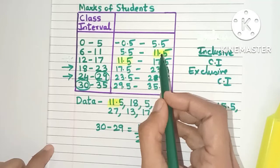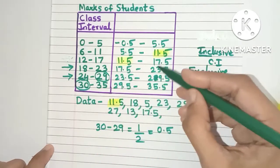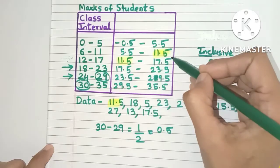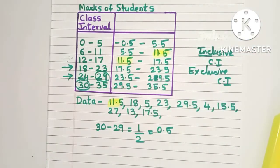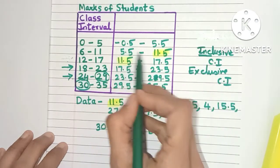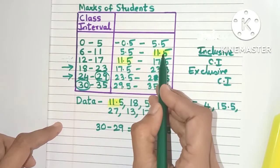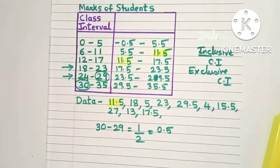But the new issue is that there are two class intervals with 11.5. So we cannot add 11.5 in both these class intervals, that will create duplicate data. So we follow a simple rule. The rule is that only the lower limit of the class interval will be included in the class. The upper limit will be excluded from the class.